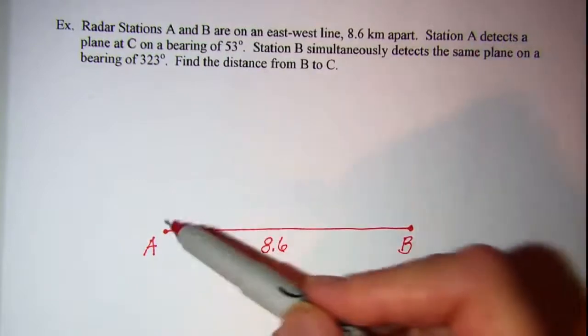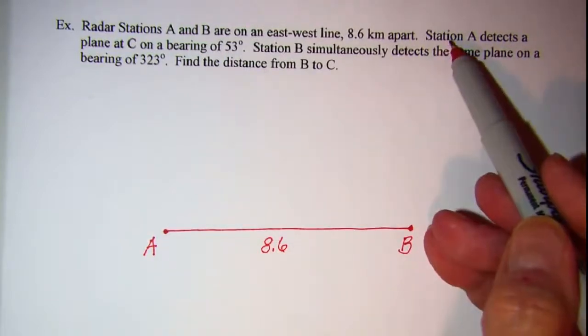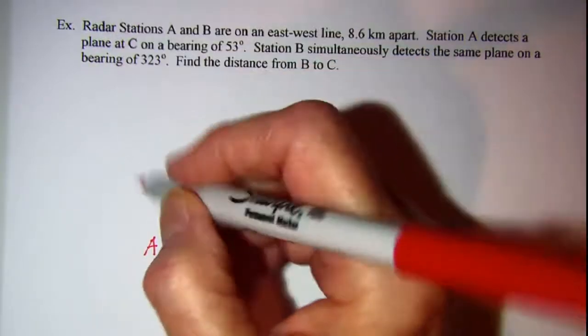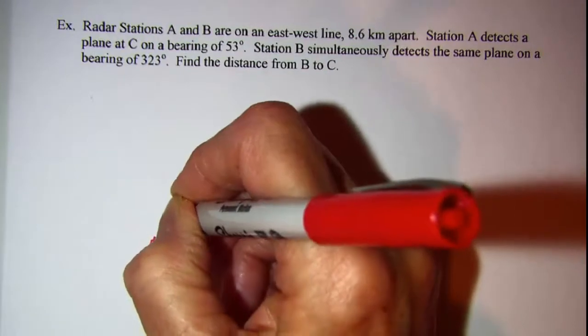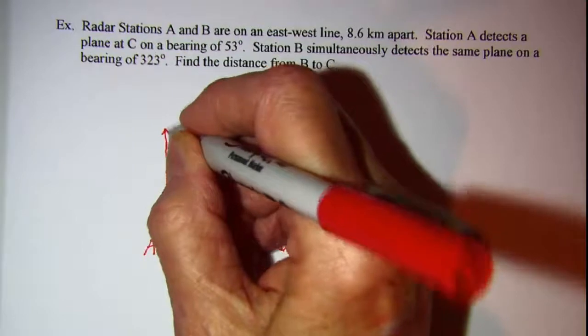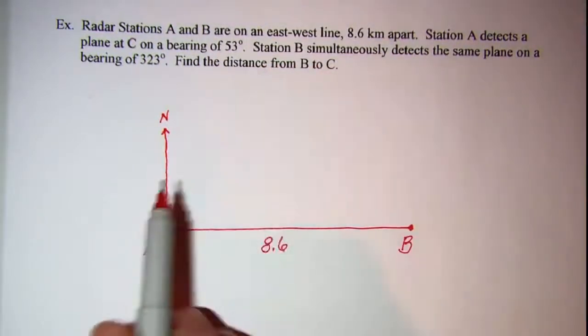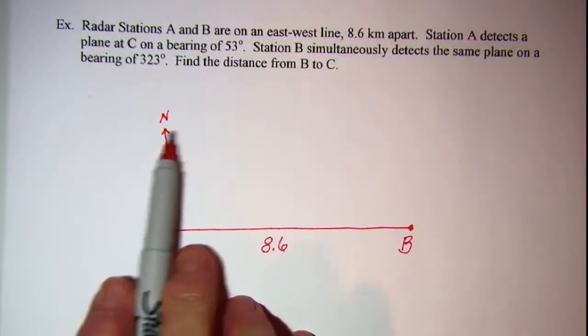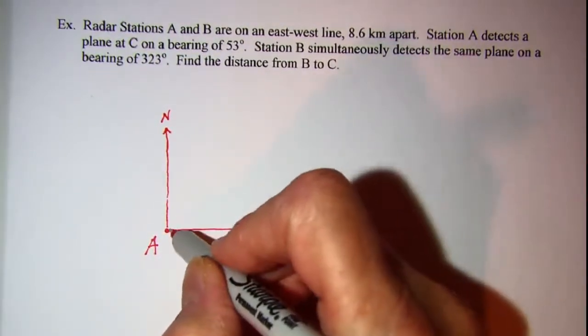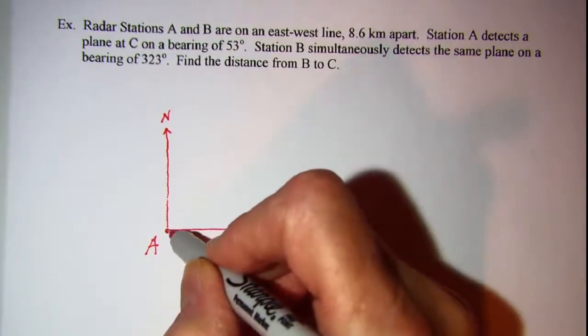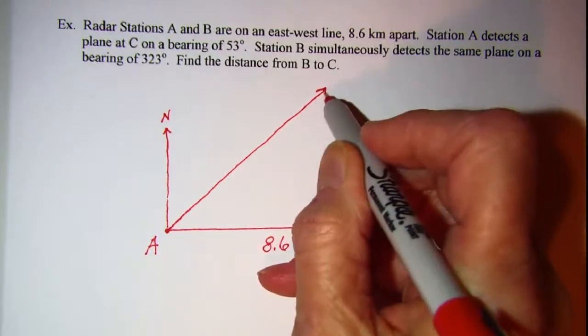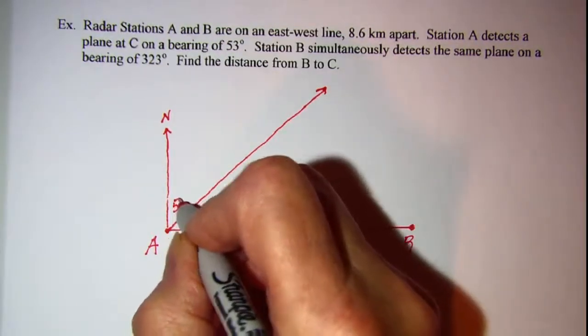Now the reason that I put A here is because I need a bearing of 53 degrees. So from our north we want a bearing of 53 degrees, so we're going to move in this direction clockwise, 53 degrees, and so it just keeps on going, but this is 53 degrees.